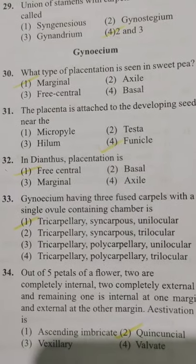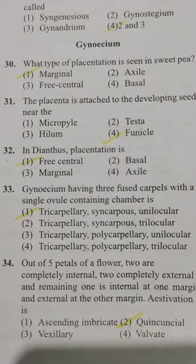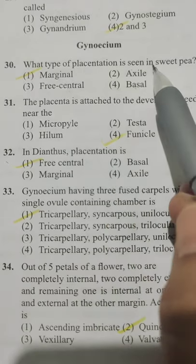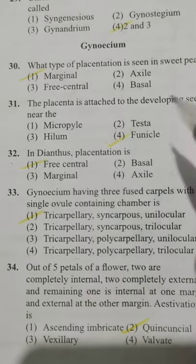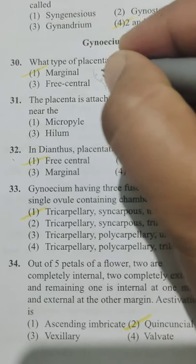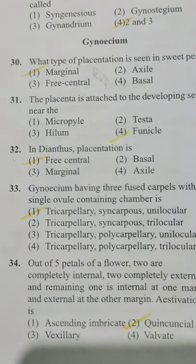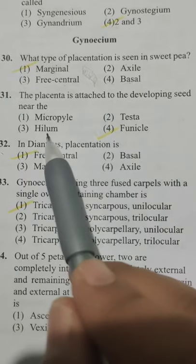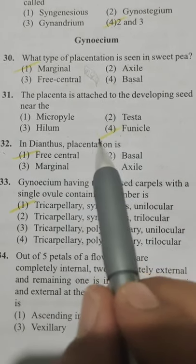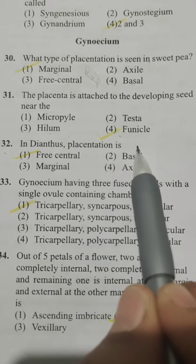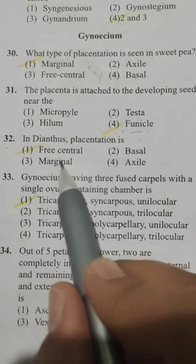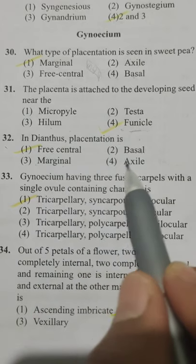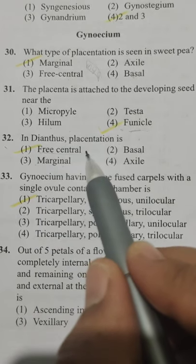What type of placentation is seen in sweet pea? Option 1 marginal, Option 2 axile, Option 3 free central, Option 4 basal. Sweet pea has marginal placentation — Option 1. Next: the placenta is attached to the developing seed near the — Option 1 micropyle, Option 2 testa, Option 3 hilum, Option 4 funicle. It is attached near the funicle — Option 4. In Dianthus, placentation is — Option 1 free central. The answer is Option 1.